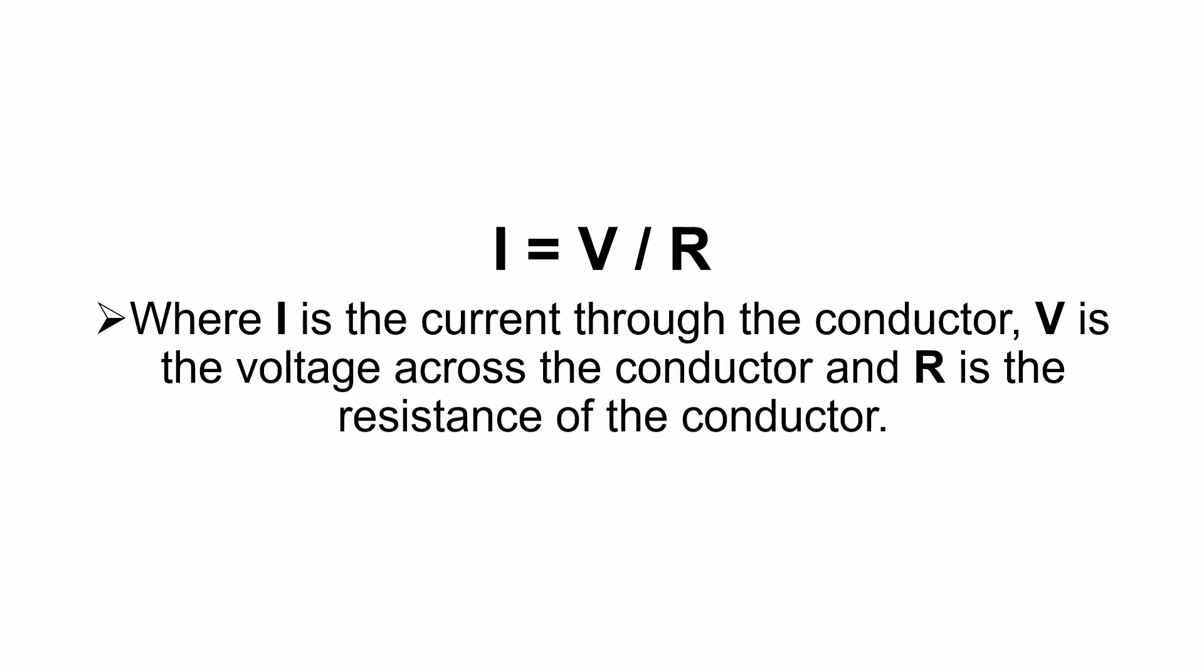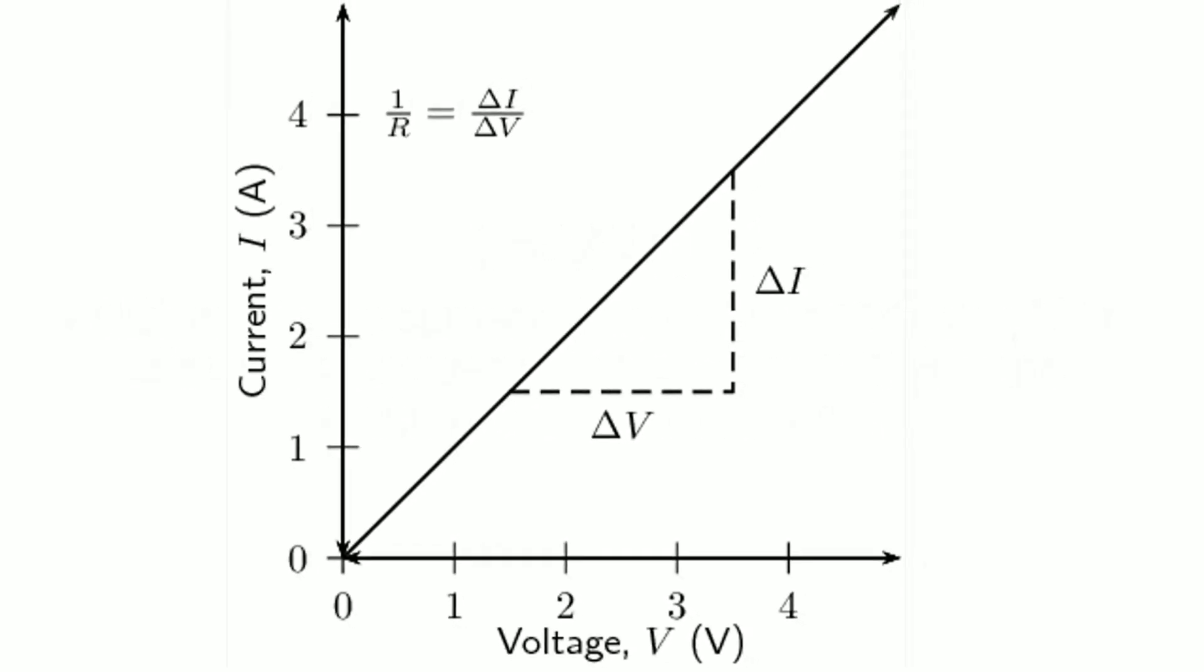Ohm's law tells us that if a conductor is at a constant temperature, the current flowing through the conductor is directly proportional to the voltage across it. This means that if we plot voltage on the x-axis of a graph and current on the y-axis, we will get a straight line.